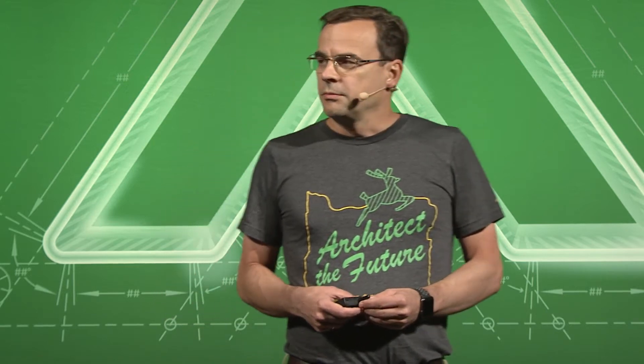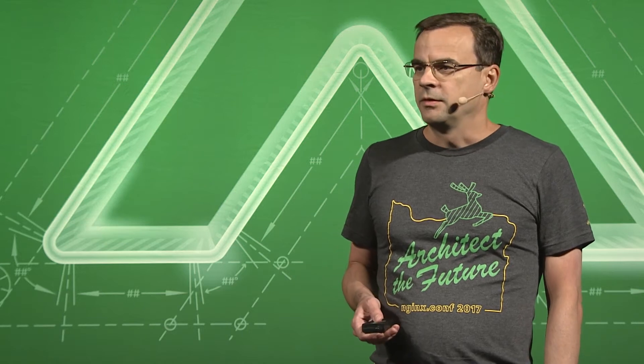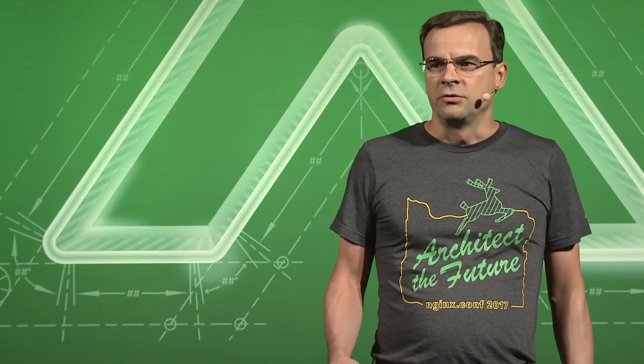This means you can change your configurations as frequently as you want. When the controller process accepts configuration requests, it validates them and sends the appropriate parts to the router and main processes. The router process has several worker threads that interact with clients. They accept client requests and pass them to application processes.